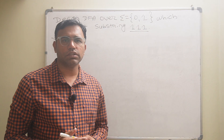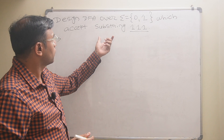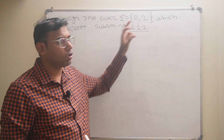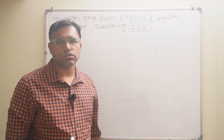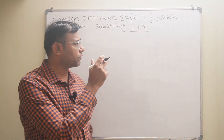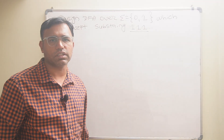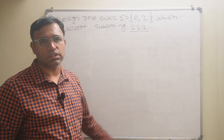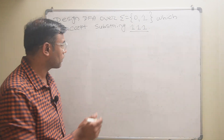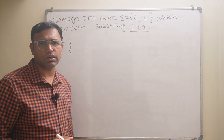Hello friends. In this video we'll see how to construct the DFA which accepts the substring triple-one, over the input symbols 0 and 1. First of all, I will generate the strings which will contain the substring 111, and then we'll construct the DFA for the same.